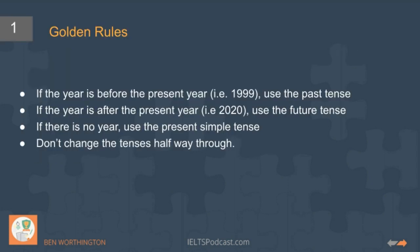The rules are quite straightforward and obvious, but you would be surprised. If the year of the graph — it's probably a graph in front of you — is before the present year that you're doing your exam, you're going to use the past tense. If it's after, you're going to use the future tense. And if there's no year, you can just use the present simple tense.